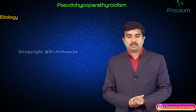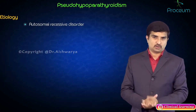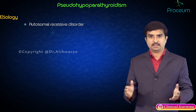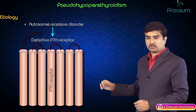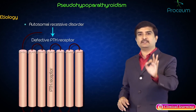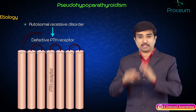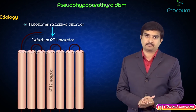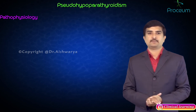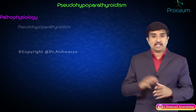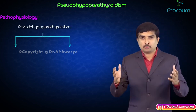Regarding etiology, it is an autosomal recessive disorder resulting in a defective PTH receptor. So the culprit here is the PTH receptor, not the parathyroid gland itself. Now, what is the pathophysiology? There are two types of pseudo hypoparathyroidism: Type 1a and Type 1b.